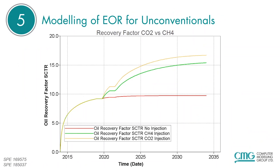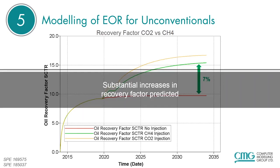The number five reason for using CMG in the unconventional reservoir space: modeling of enhanced oil recovery for unconventionals. The graph shown illustrates the difference in recovery factors from no injection versus methane injection versus CO2 injection. You can visually see an enhanced recovery from these different injection methods and a relative sense of which one may perform better in your particular case. Two SPE papers at the bottom left go into more detail on EOR and unconventionals using CMG.